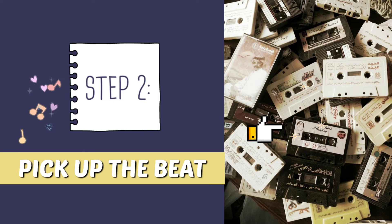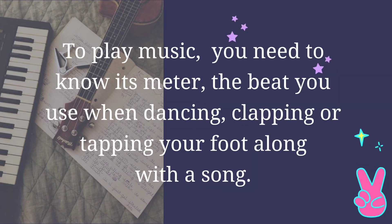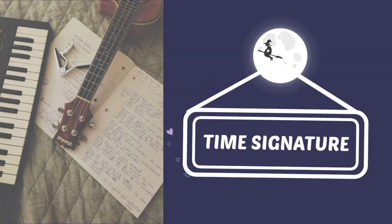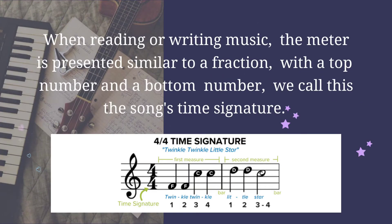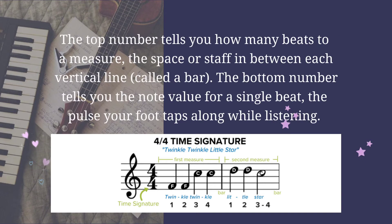Step 2: Pick up the beat. To play music, you need to know its meter — the beat you use when dancing, tapping, or tapping your foot along with a song. Time Signature: when reading or writing music, the meter is presented similar to a fraction, with a top number and a bottom number — we call this the song's time signature. The top number tells you how many beats per measure, the space in between each vertical line called the bar. The bottom number tells you the note value for a single beat, the pulse your foot taps along while listening.